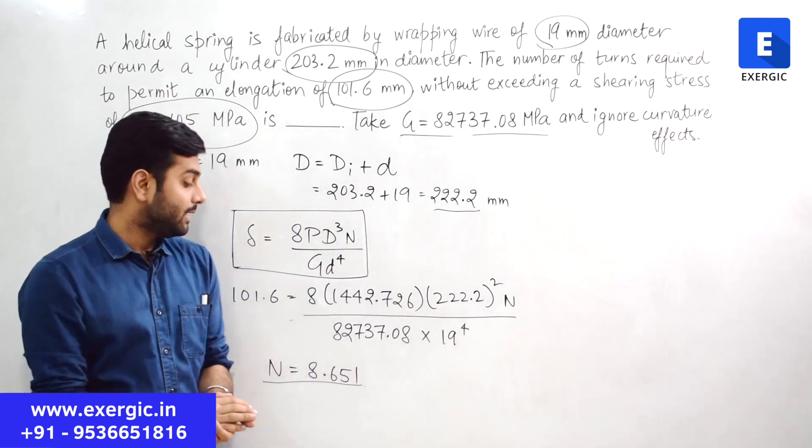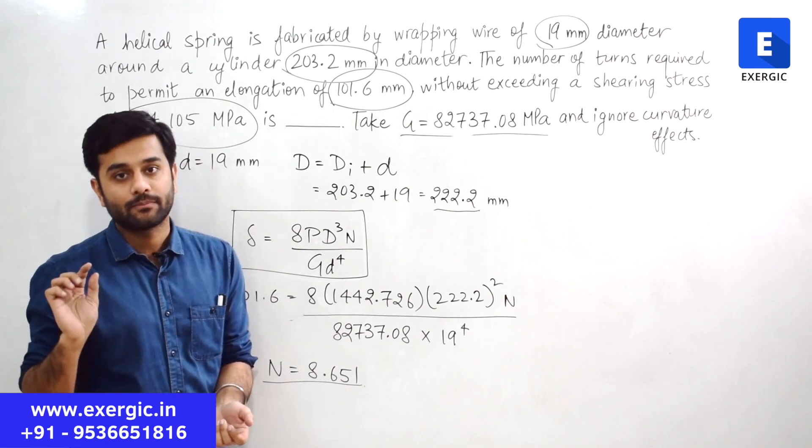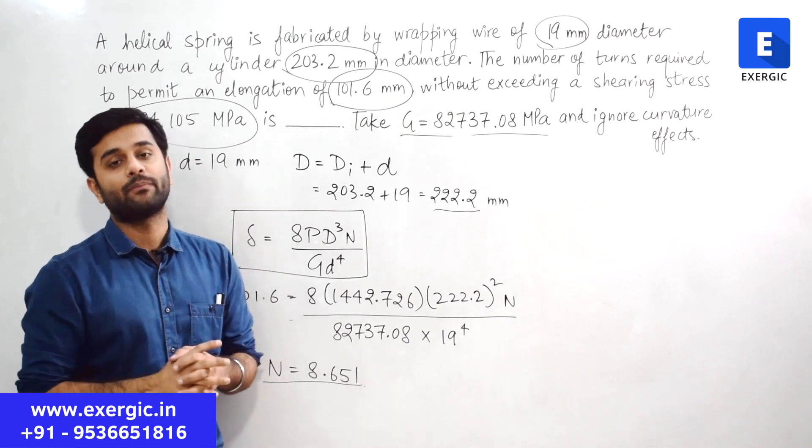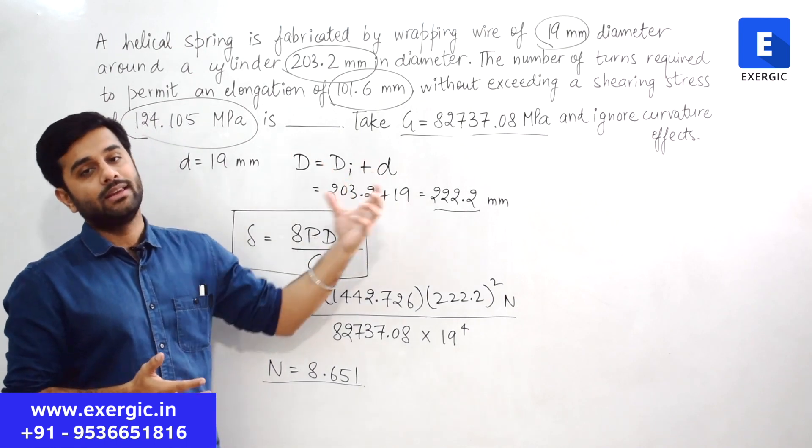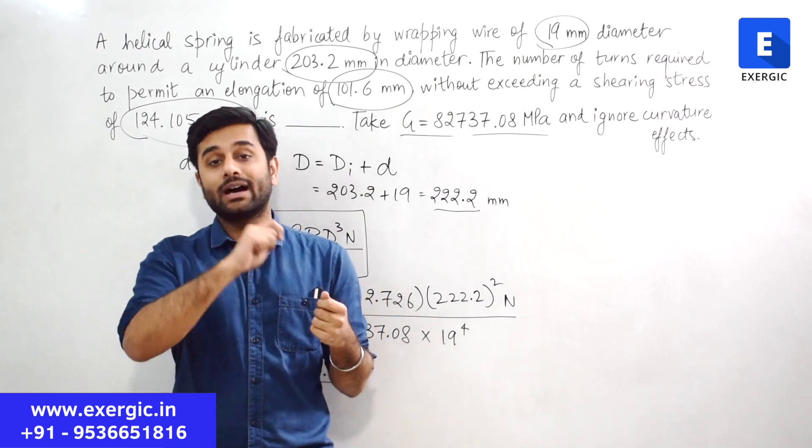As I told you in this question, if the answer was coming exact 8.5, it would have been a correct answer in this specific case. Right? But as we know that generally, for any suitable, any appropriate use, number of turns of a spring are complete. Right? That is how they are made industrially.